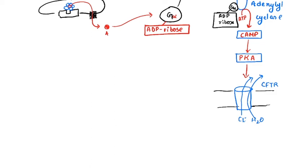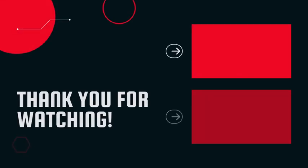CFTR allows chloride ions and water molecules to move out of the cell. This is the reason why in cholera patients there is development of watery diarrhea — because CFTR is continuously activated and chloride ions and water are continuously moving out of the cell and out of the body. This is how the cholera toxin functions and causes the watery diarrhea we see as a consequence.